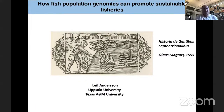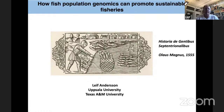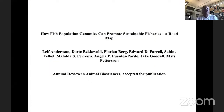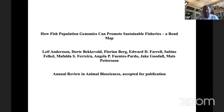We will talk about how fish population genomics can promote sustainable fisheries. I start by illustrating this from a book published for the Swedish market in 1555, which illustrates life in the North and how important fishery was — sometimes when fish are spawning, the schools are so dense that if you put an axe in the water, it will not sink but stand on the shoulders of all the fish. I'd also like to mention that we have a paper coming out in Annual Review of Animal Biosciences from my group and colleagues, showing how we think we could use population genomics in fisheries.